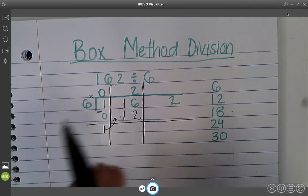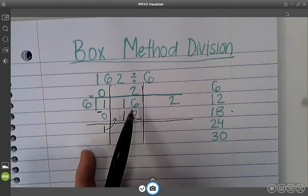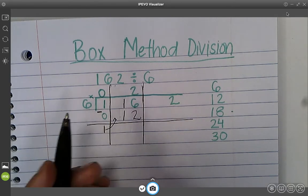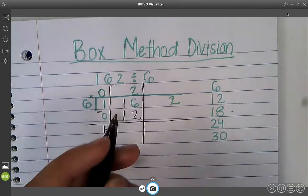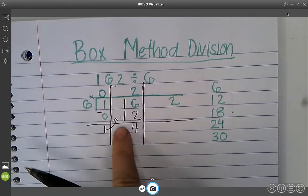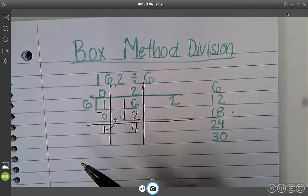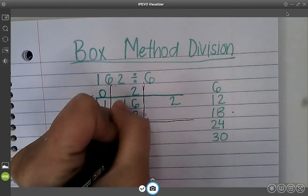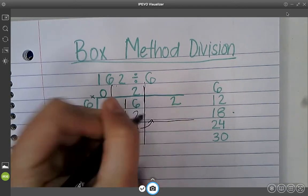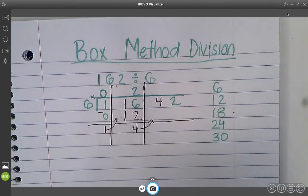Now I subtract again. If 18 were here, 6 minus 8 you can't do, right? So 6 minus 2 is 4. 1 minus 1 is 0. If you want to add it, you can. I do not like to. And now we have 42.